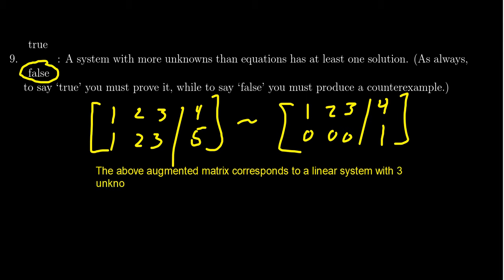The above augmented matrix corresponds to a linear system with three unknowns and two equations, but it is inconsistent. I hope I spelled these words right.